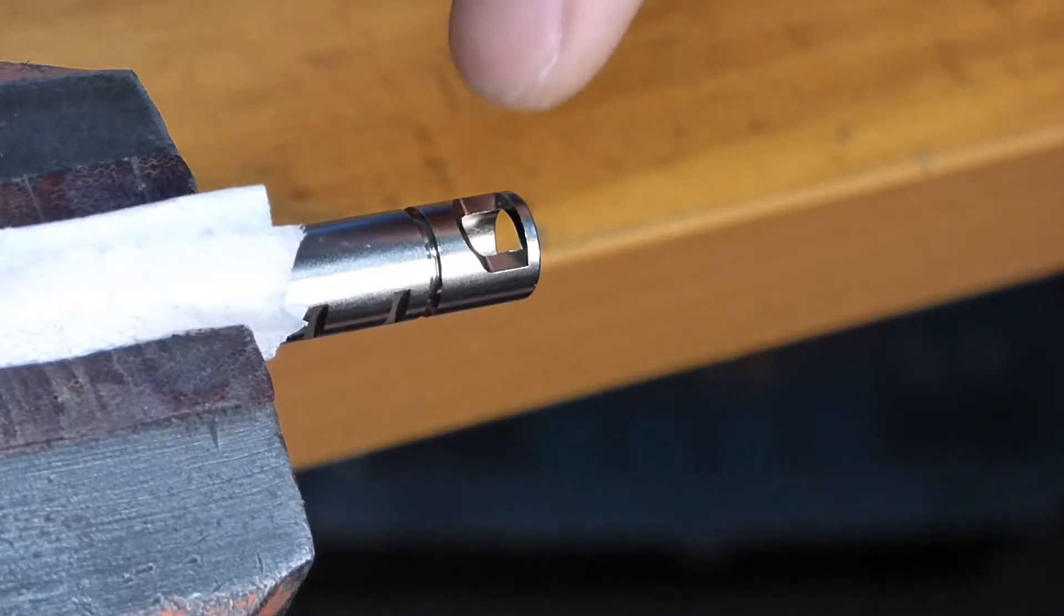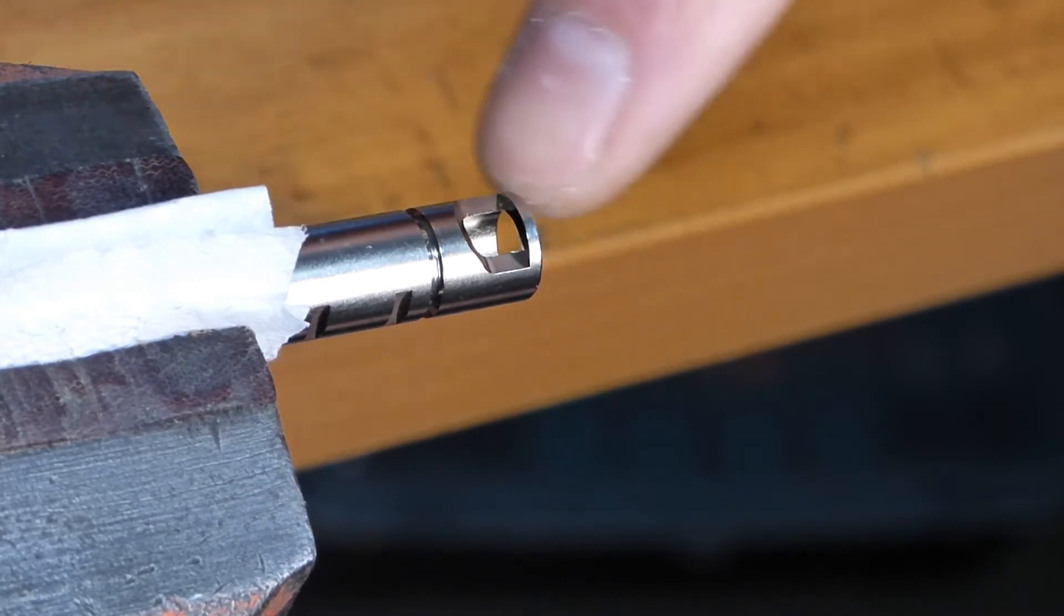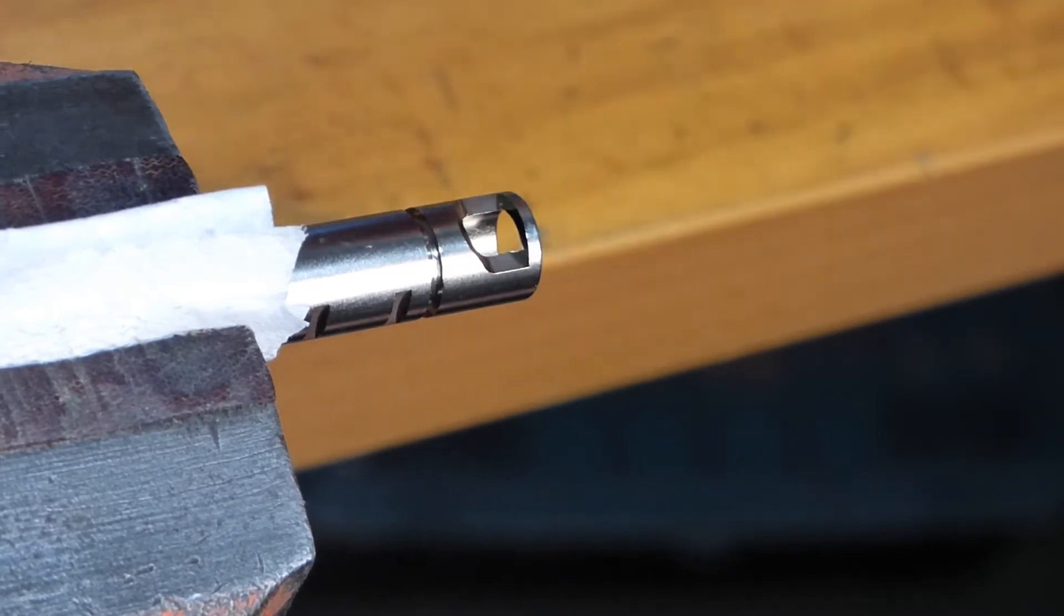The reason we have to cut this bridge off is to make it compatible with the type of hop rubbers it's going to use. That is a VSR style rubber, a Maple Leaf Decepticon. And that does not need this back bridge. That back bridge would be to support an AEG style rubber.